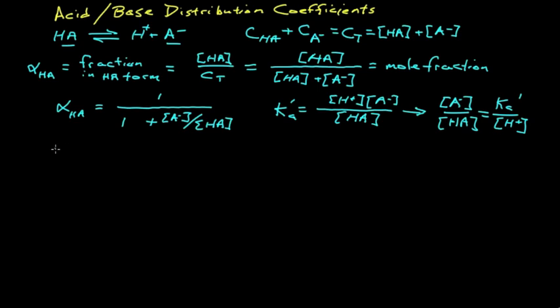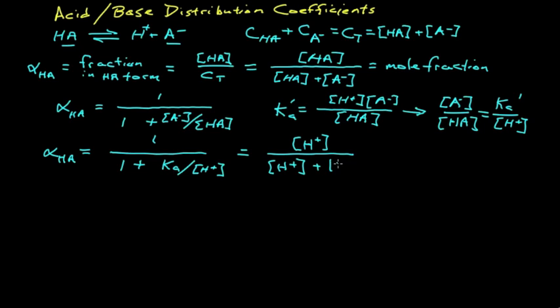Substituting back in, we have that alpha HA is equal to 1 over 1 plus KA over H plus. And now, removing the fraction in the denominator, we multiply through by H plus, and we get that our alpha value is H plus over H plus plus KA prime.